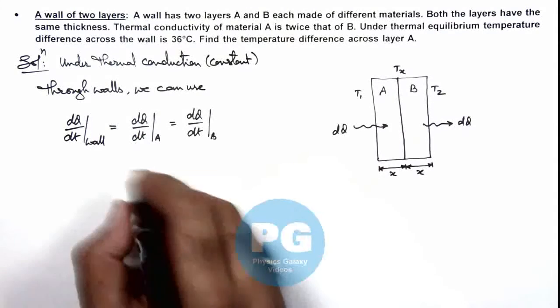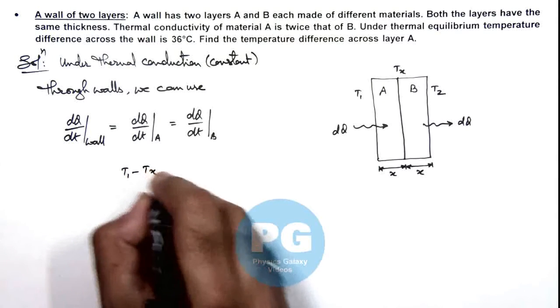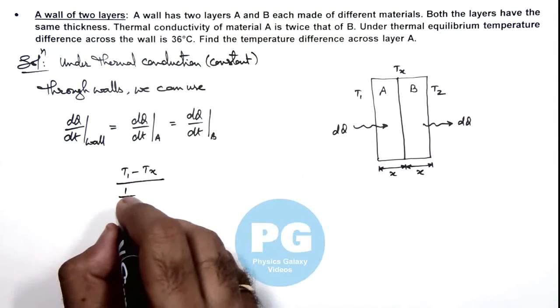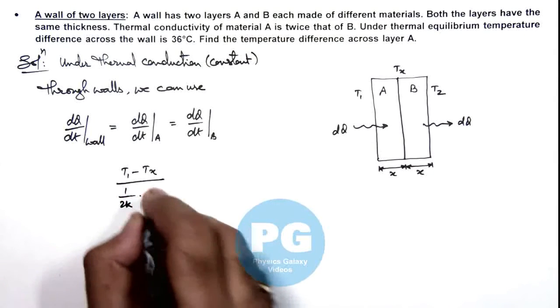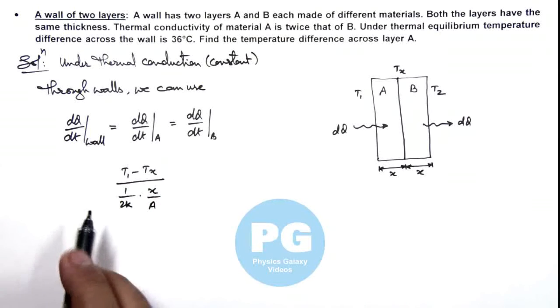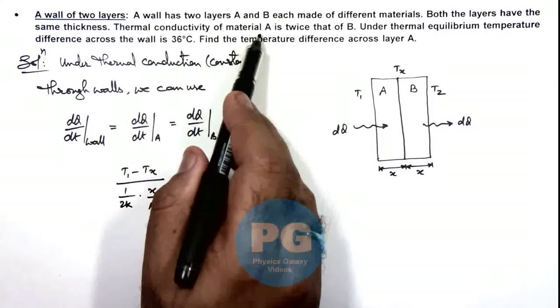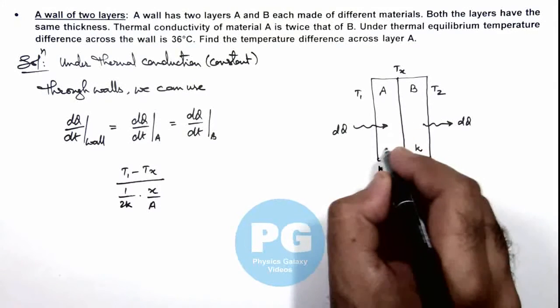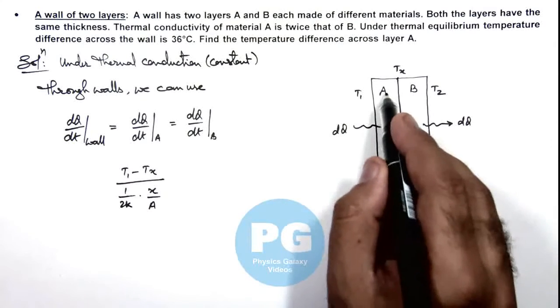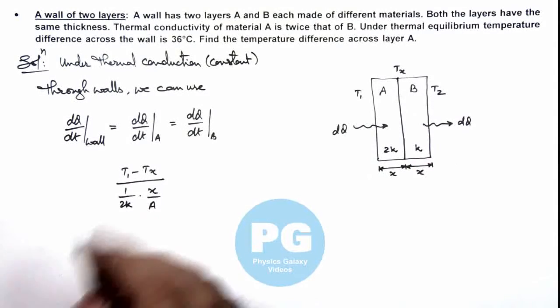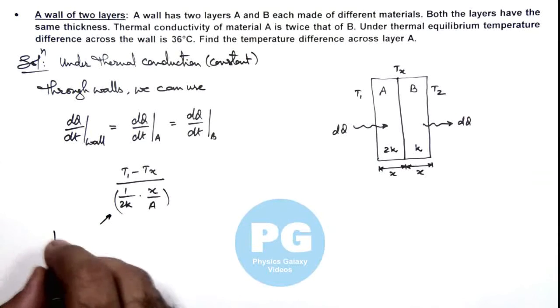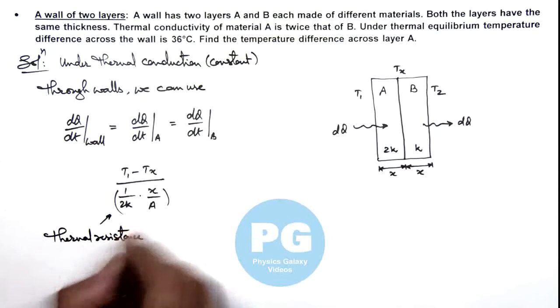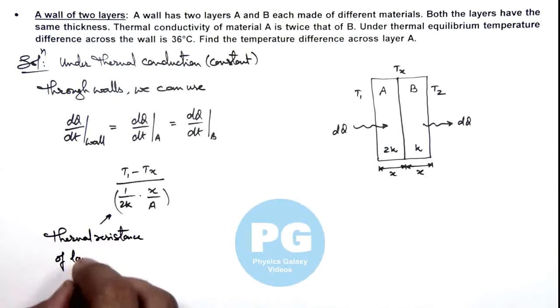For A and B, we can directly write dQ/dt through A as T1 minus Tx divided by the thermal resistance of A, which we write as 1 over 2k times x over A. Since thermal conductivity of material A is twice that of B, if B has conductivity k, then A has thermal conductivity 2k. In the denominator, I am writing the thermal resistance of layer A.